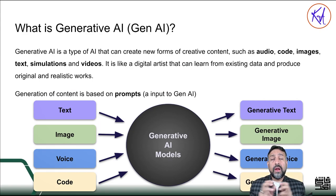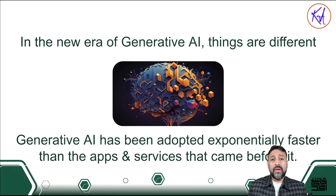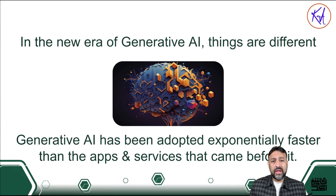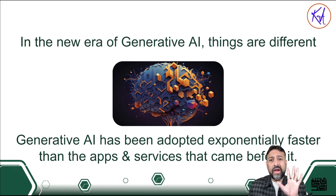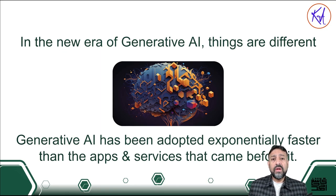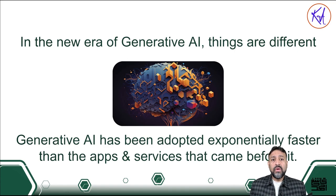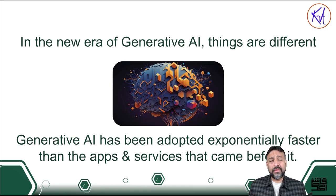Let's look at the popularity of generative AI and some facts. Generative AI has brought a new disruption in this era and has been adopted exponentially — faster than any app or device we've seen, like Facebook or TikTok. As a matter of fact, it took only five days for ChatGPT to reach 2 million users, and only two months to reach 100 million users. In contrast, it took TikTok nine months and Instagram two and a half years to reach 100 million users. That's the adoption rate of generative AI.